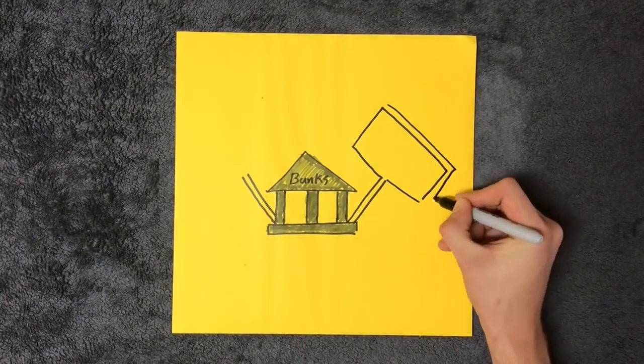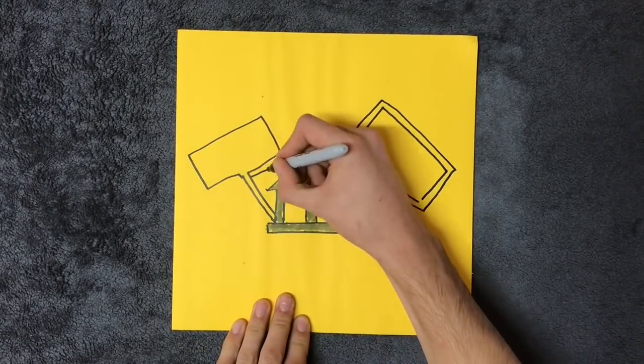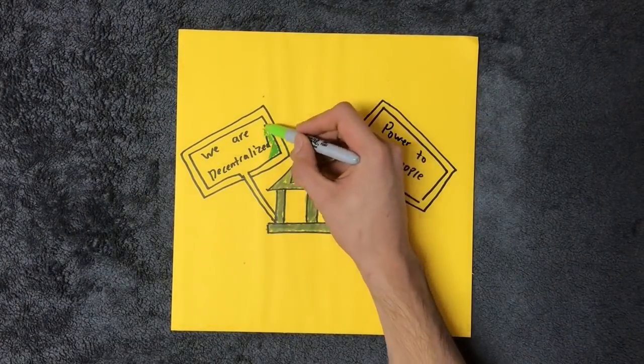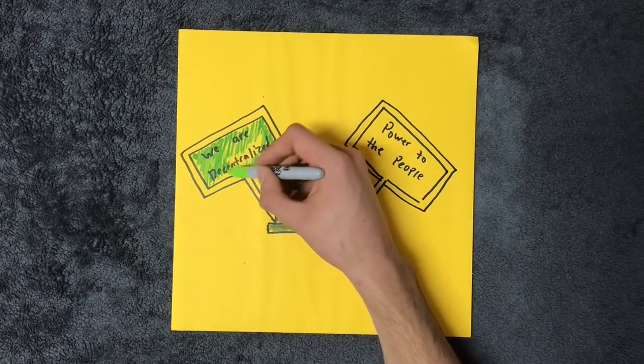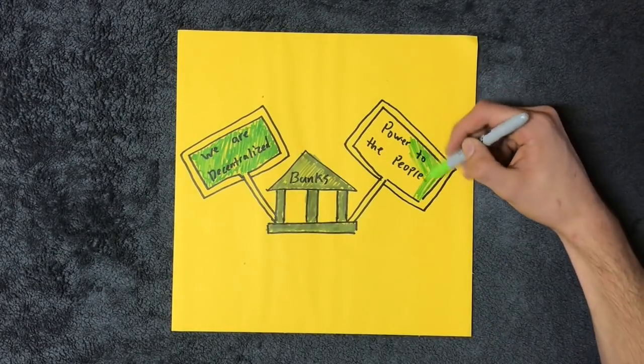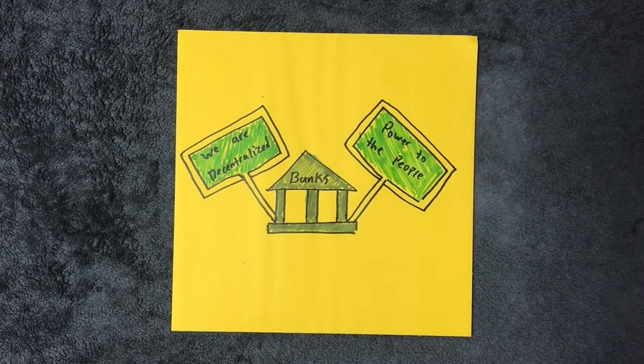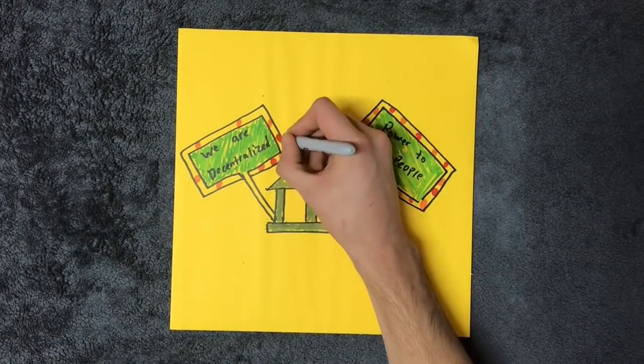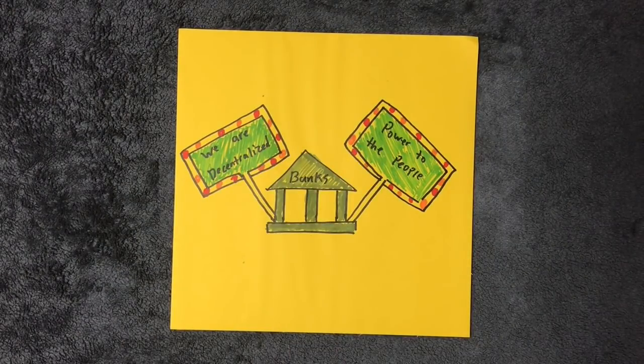Secondly, with the introduction of SegWit, relay nodes are needed to relay the segregated signatures from the transactions. Core has created the need for a party that has no financial incentive to do so. By fooling you, you keep their broken system running. Bitcoin is supposed to be a system regulated by incentives, but now relies on trickery and lies.